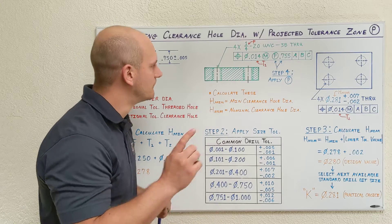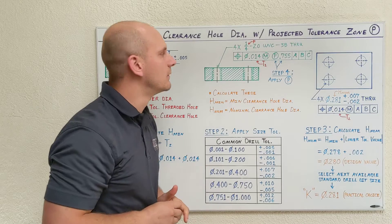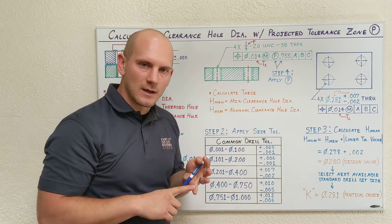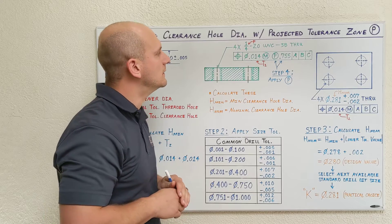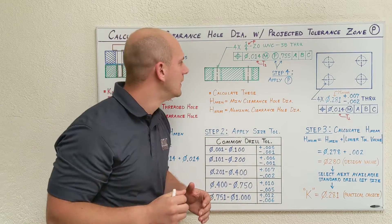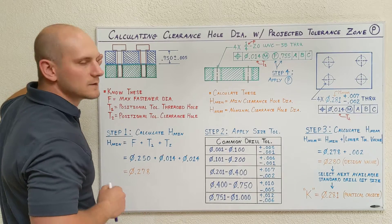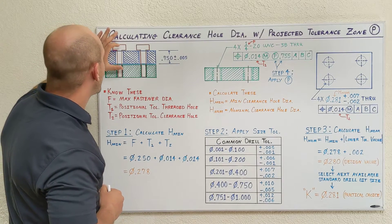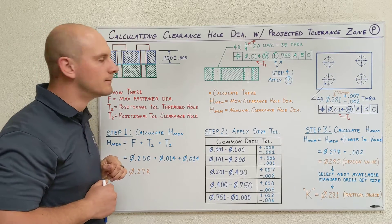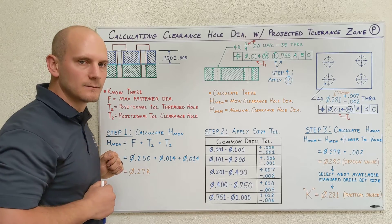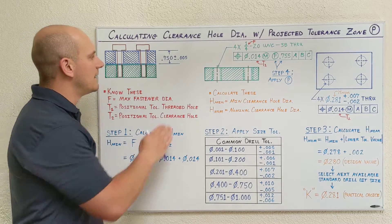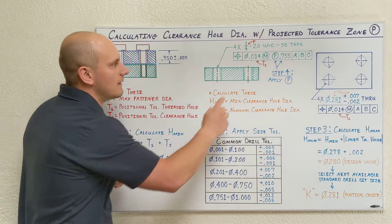How do we apply projected tolerance zone? First, we apply this circle P symbol inside the positional tolerance that's controlling our features. This tells the inspector as well as the machinist that we're invoking projected tolerance zone. Next, we need to apply a value right next to the circle P. To get that value, go to the part that has the clearance holes and look at the maximum length of the clearance hole feature. In this case, the maximum length equals the maximum thickness of the plate. The thickness is 0.750 plus or minus 0.005, so the upper end is 0.755 — and that's the value stated here.